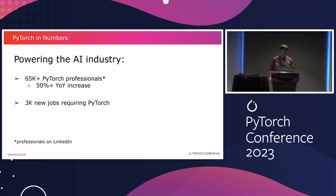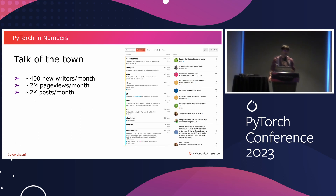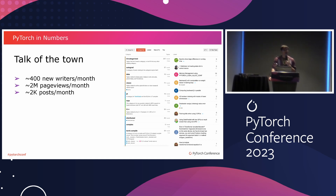This also translates to a significant pickup on the industry side, which had been lagging before but is now picking up a lot of pace. From LinkedIn statistics, we see a 50% increase year over year of people listing PyTorch as a core skill, and more new jobs requiring PyTorch. Our Discuss forum is the main place where users and developers go, with around 400 new people every month, more than 2 million page views, and about 2,000 posts every month — very active, and we need a lot of people to answer all these questions.